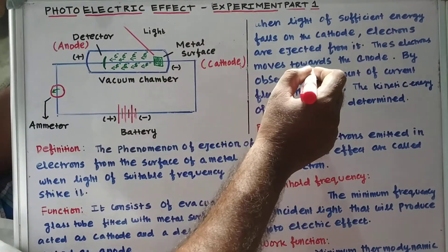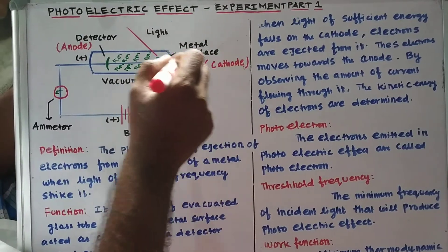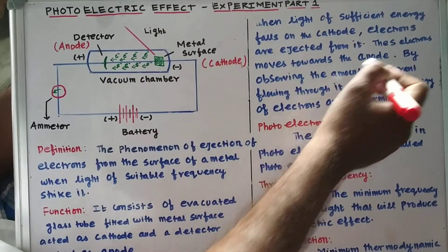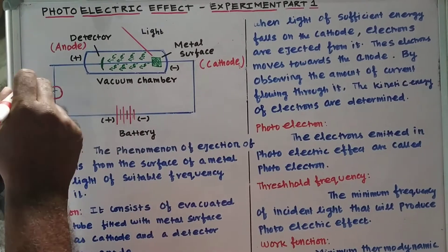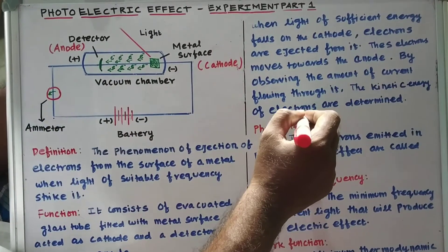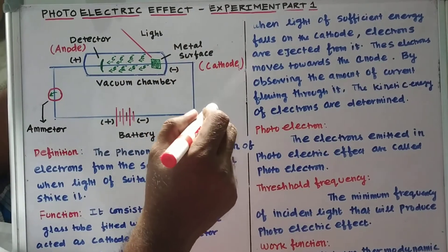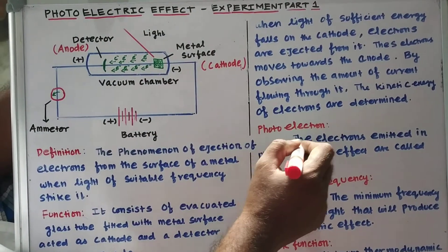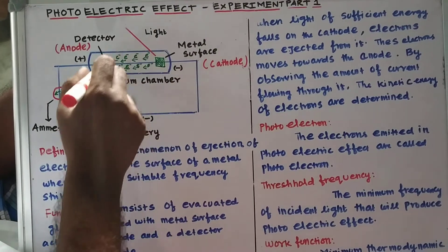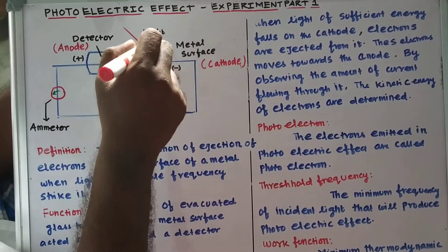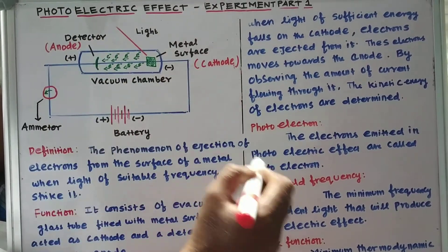These electrons move towards the anode. By observing the amount of current flowing through the circuit with the help of the ammeter, we can determine the kinetic energy of the emitted electrons. The electrons emitted in the photoelectric effect are collectively called photoelectrons.